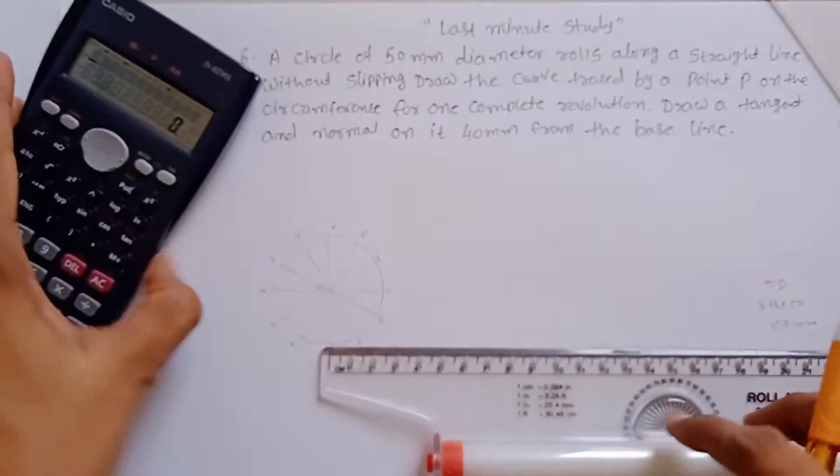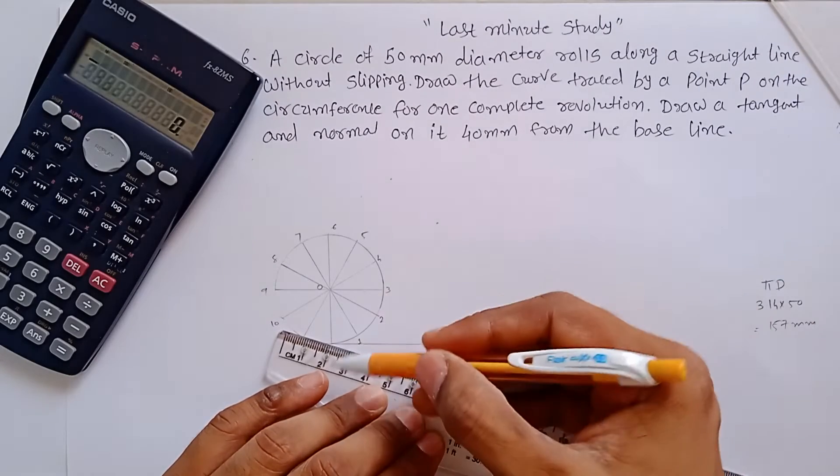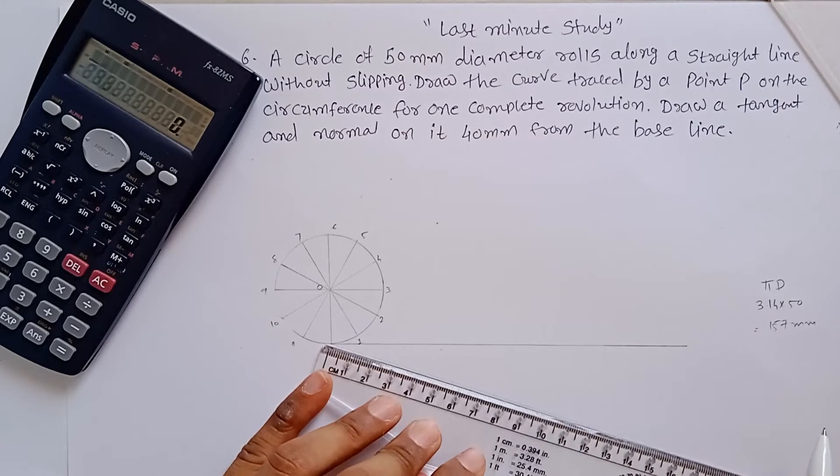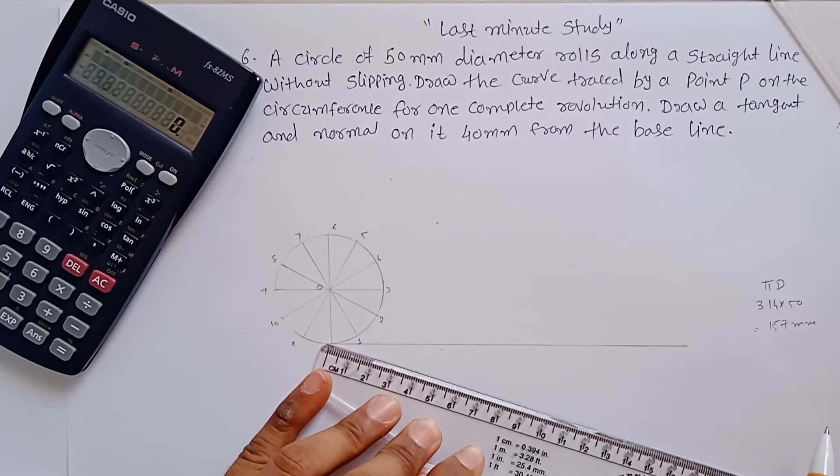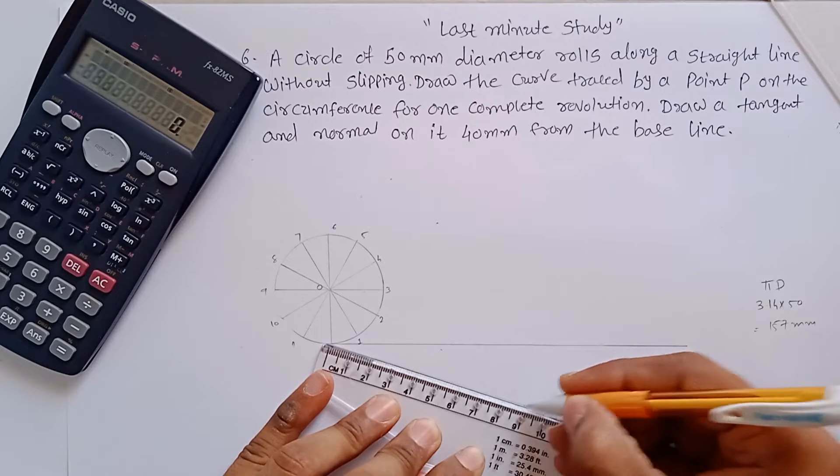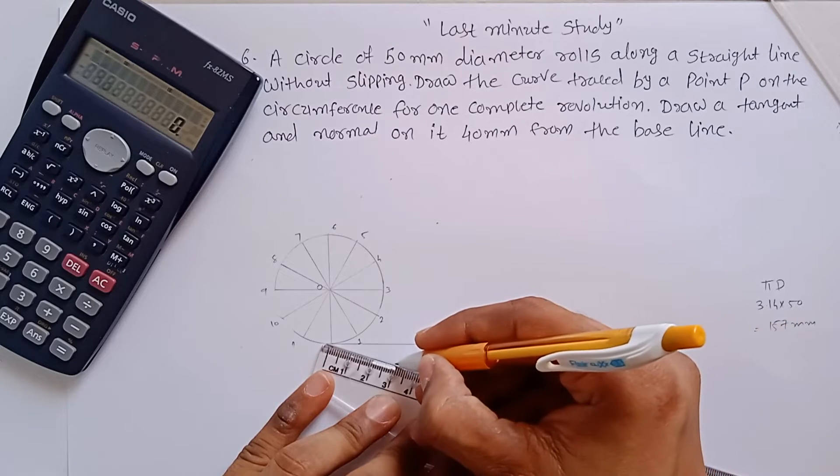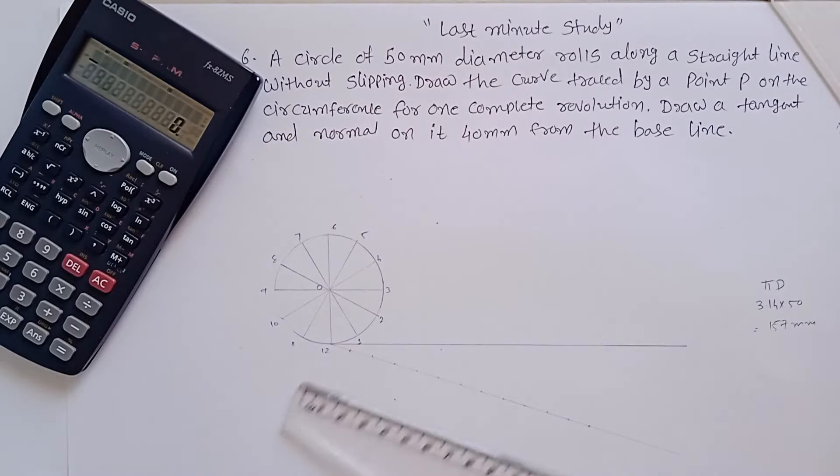You have to use that method which we have discussed earlier. Draw a line nearer to 30 degree, and the length of this line must be divided by 12 very easily. So we choose 12mm and divide the whole line into 12 equal parts like this.